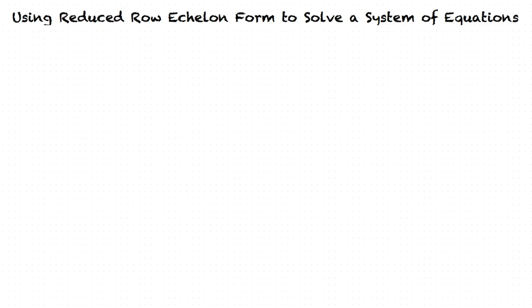We will start by looking at the systems of equations. Negative 1x plus 5y is equal to 4, and 5x plus 2y is equal to 7.